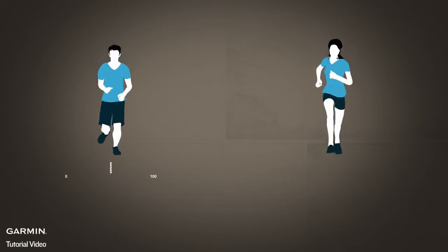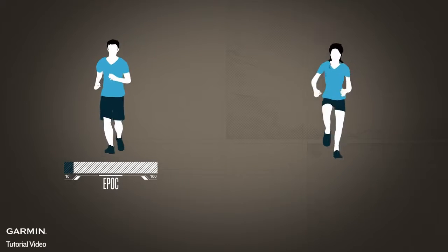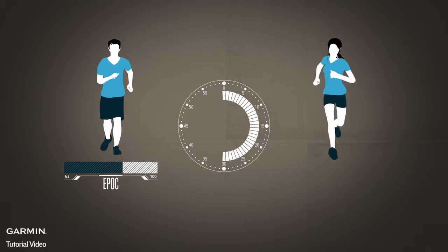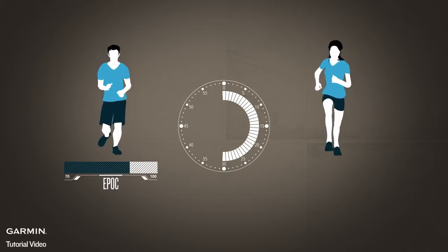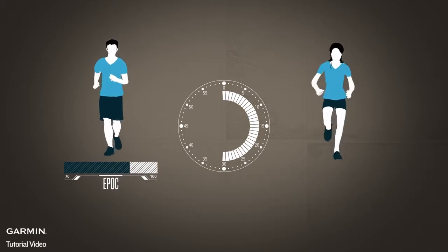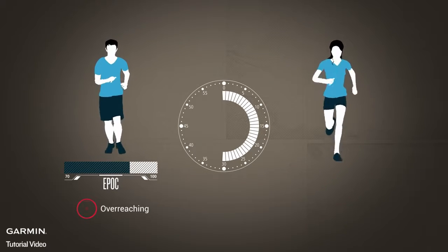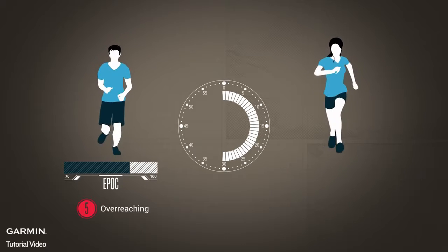The aerobic training effect feature takes this into account, scaling your exercise dose to your fitness level and training habits. For example, for a person who has not been exercising regularly, a half-hour run at 80% of maximum heart rate would produce an EPOC of about 70, resulting in a training effect of 5, which is categorized as overreaching.